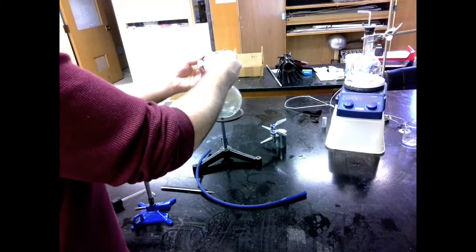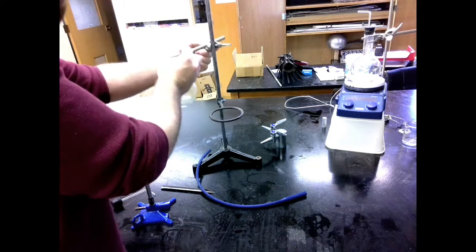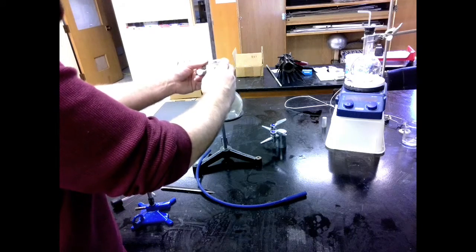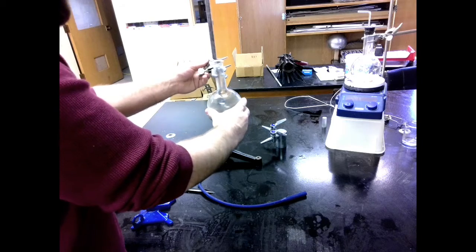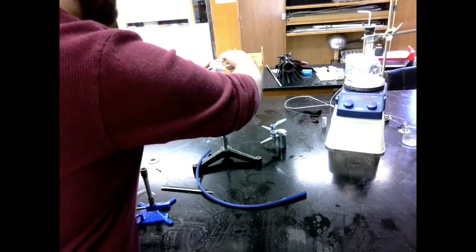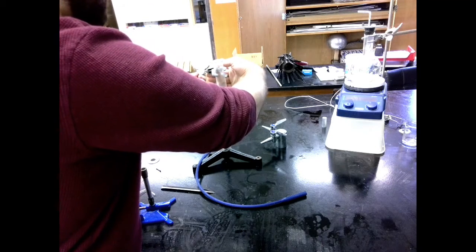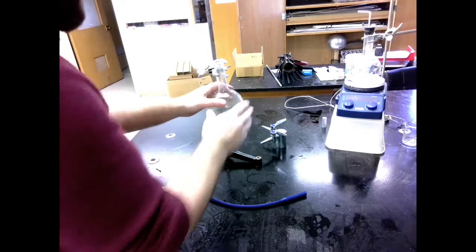Now I need to loosen this. This can move freely, and this clamp here can move freely so that I can place this nice and gently right in that ring, and then clamp both parts. Clamp it to my ring stand, clamp it to my holder. And now this is nice and sturdy.